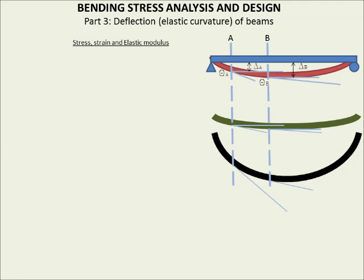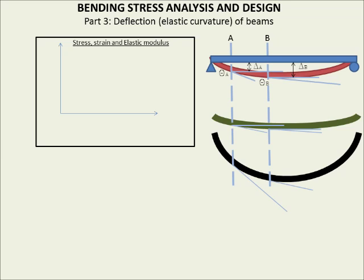In order to do this — and again we're in the elastic range — we have to say something about the elastic modulus. This is essentially a spring constant that tells you how much deformation results from a certain amount of stress in a given material. It basically shows you the relationship between stresses and change in shape. If you want to brush up on the elastic modulus, you can look at the first video in the bending stress analysis and design series.